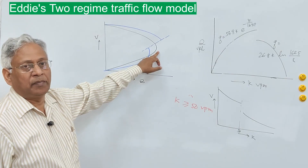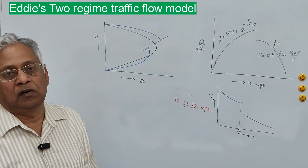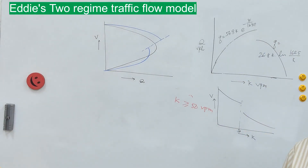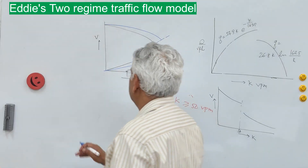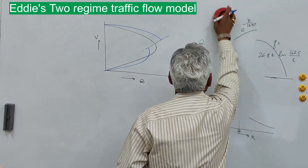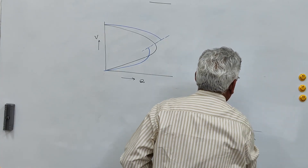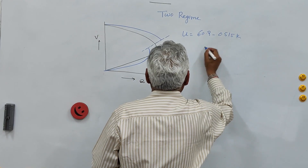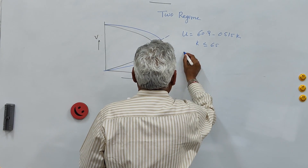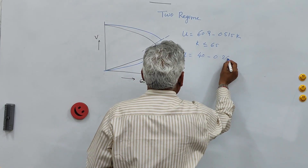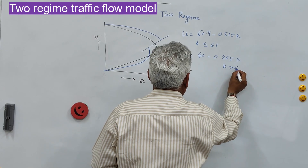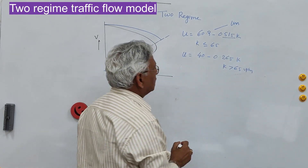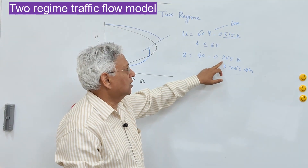This two-regime or three-regime model can be of any shape — logarithmic, exponential, or straight line — depending upon the data. Certain researchers have suggested a straight-line relationship: u = 60.9 − 0.515k for k ≤ 65 vehicles per mile (uncongested), and u = 40 − 0.265k for k > 65 vehicles per mile (congested).